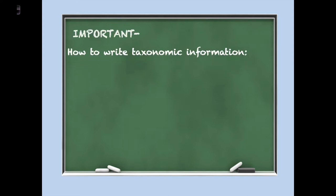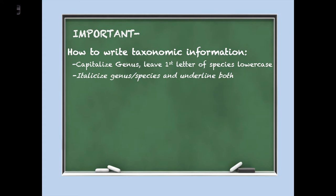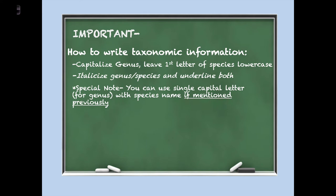How do we write the scientific name of an organism? We need its genus and its specific epithet. The genus name is capitalized, and the first letter of the species name or specific epithet is left lowercase. Both are italicized and underlined. In a report, you initially write the full name following those rules; after that, you can abbreviate by using just the capital letter of the genus — so for Homo sapiens, after first mention, you write H. sapiens, still lowercase, italicized, and underlined.